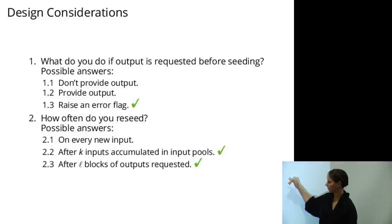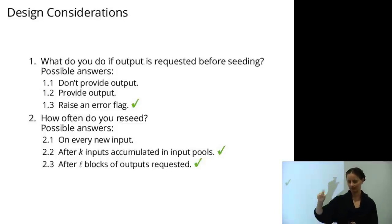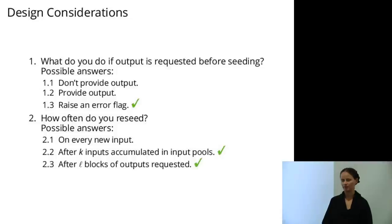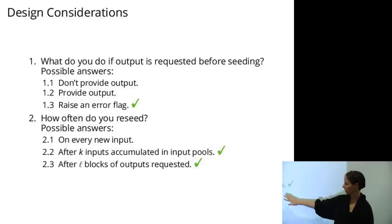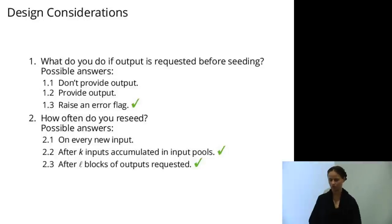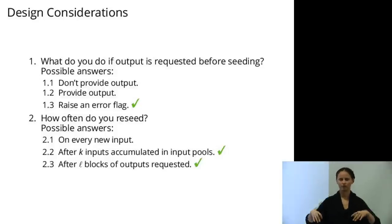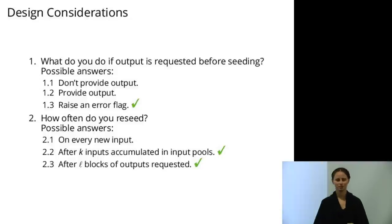There are two threat models here. One reason not to reseed on every new input is that if you're getting leaked small amounts of entropy, an attacker might be able to brute-force the small changes and track your state. So you accumulate more entropy than the attacker can brute-force. You also want to reseed after outputting a certain number of blocks, because an attacker who gets a huge number of blocks of output from your pseudorandom generator could work backwards to determine the state, and then continue to get future outputs.